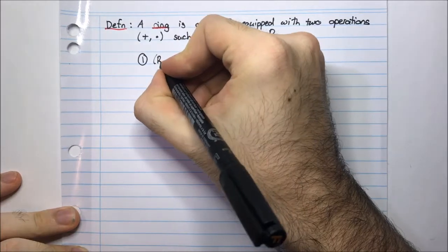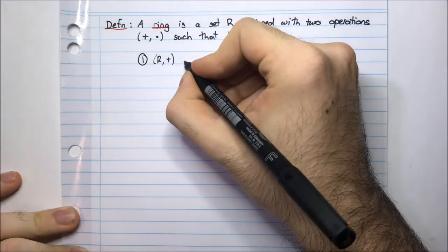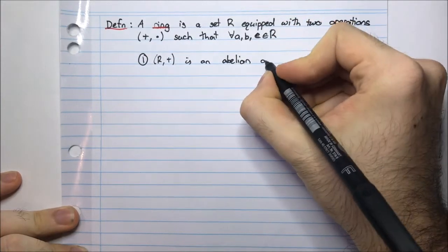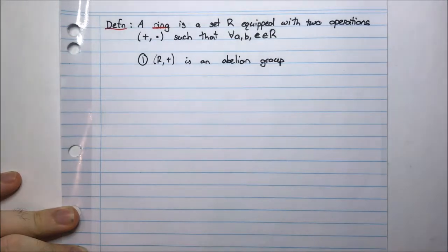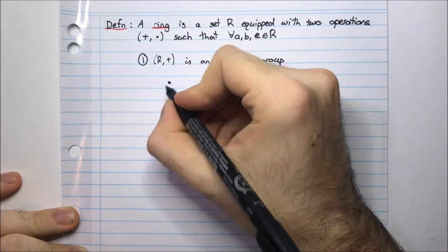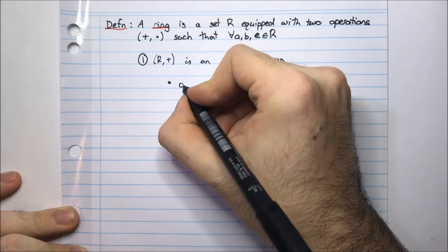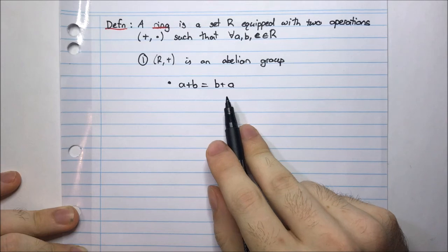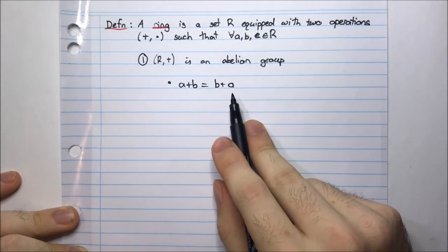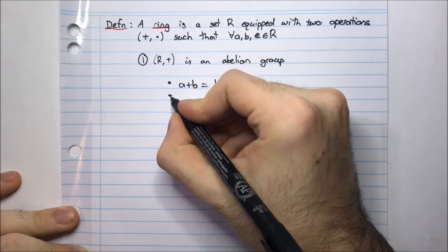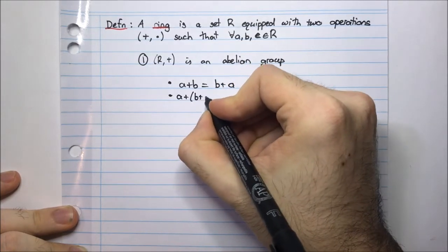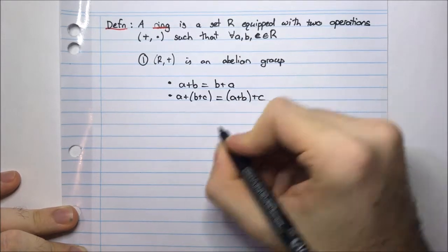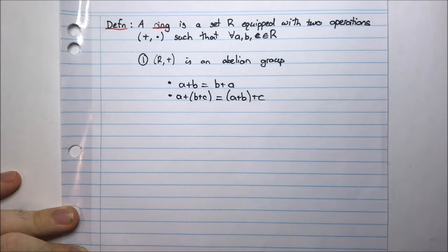The set R with the operation of addition is an abelian group. An abelian group just means it's a commutative group, and it satisfies these conditions. Firstly, A plus B equals B plus A — in other words, addition is commutative. It also satisfies that A plus B plus C equals A plus B plus C, which is known as the associativity law for addition.